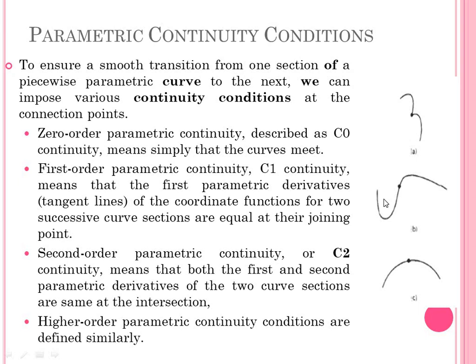C2, or second order parametric continuity, means that both the first and second parametric derivatives of two curve sections are the same at the intersection — the rate of change of the tangent vector at the joining point is equal for both curve sections, so the tangent line transitions smoothly from one section to the next. With C2 continuity, the rate of change of the tangent line is also the same, giving very smooth curvature and allowing smooth transition from one curve section to the next.